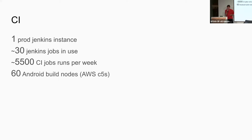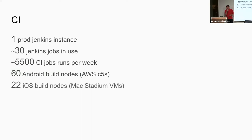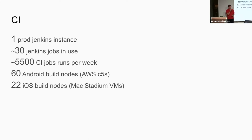We have a lot of Android build nodes because they're cheap — easy to provision on AWS and we can autoscale very easily. On iOS, everything is difficult. We use a third-party provider called Mac Stadium for VMs. We're not super happy with VMs, so we're actually testing bare metal right now. We have a lot fewer iOS nodes because it's super expensive.